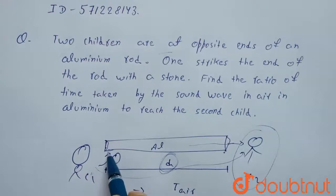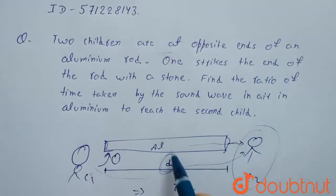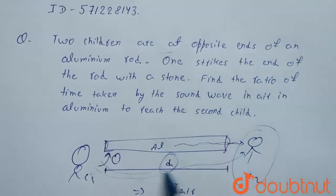So C1 strikes the aluminium rod with a stone and C2 will hear the sound coming by the aluminium and by the air.